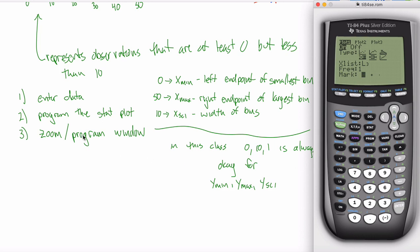I want to show you the zoom feature because I haven't shown you that yet. It does the same thing as programming the window, that x min, x max, x scale stuff that we talked about in the histogram video, except you don't physically enter those in. Your calculator guesses at what you probably want for the statistical plot that's currently in your calculator.